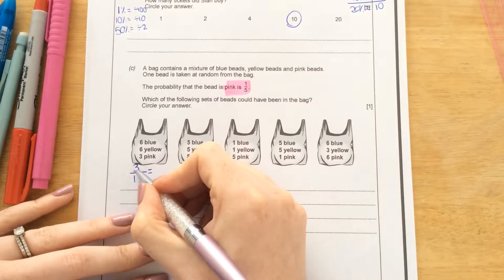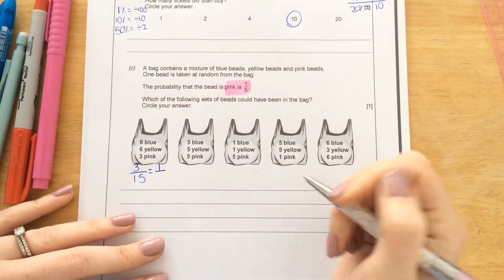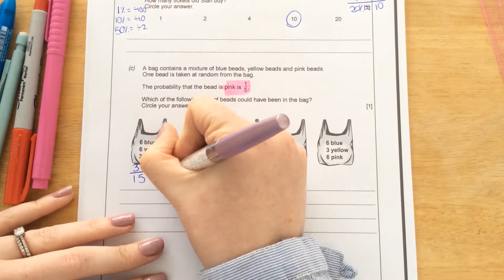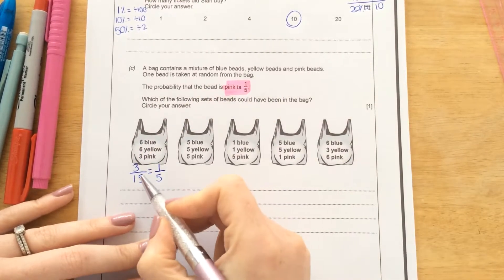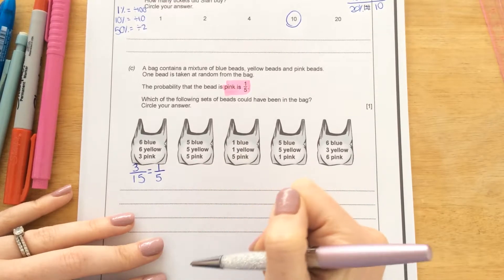How many times does 3 go into 3? Once, that's my new top number. And how many times does 3 go into 15? 5 times.